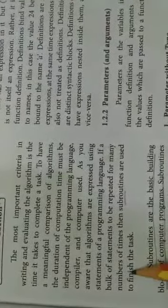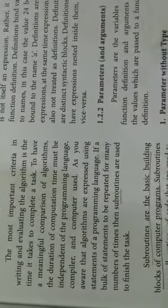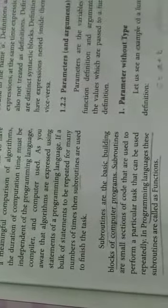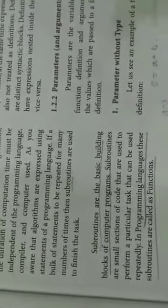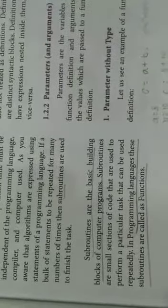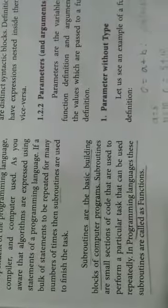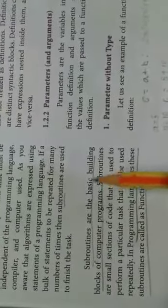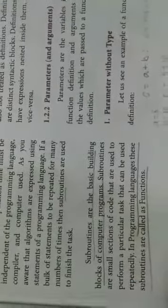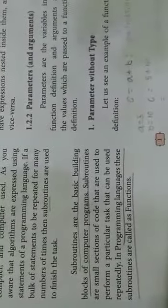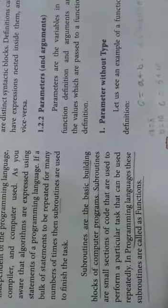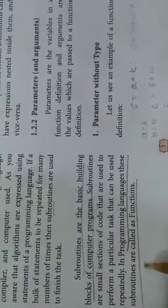Subroutine is used for finishing a task, and we are able to find a complete algorithm using it. It is a building block of a computer program. A small section of code in a very big program — in a small, particular area — is where you can use a subroutine. The whole part is separated and can be repeated by the subroutine.